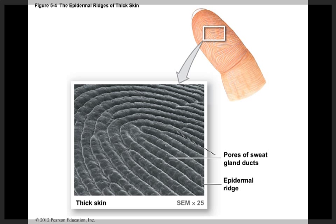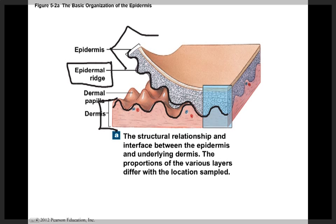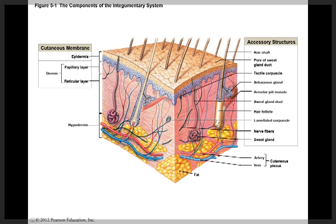Fingerprints are unique to each individual and are found in thick skin. Looking at the connection between the epidermis and dermis, we can see they do not have a straight edge but a curved one. The epidermis has projections down into the dermis called epidermal ridges, and the dermis has projections upward called dermal papillae. It is these ridges and dermal papillae that give a person their fingerprints. This ends the segment on the epidermis, and the next segment will cover the dermis.